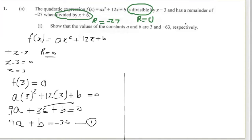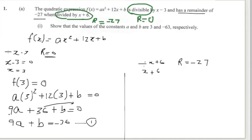For Equation 2, when I divide by x + 6 I get a remainder of negative 27. Solving x + 6 = 0 gives x = negative 6.